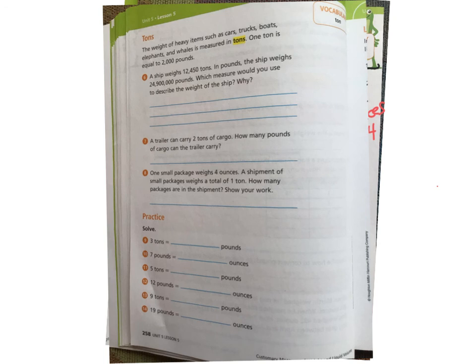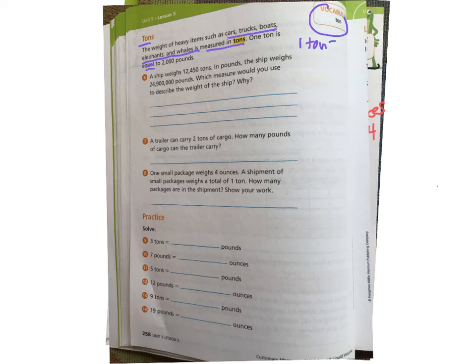And here we are on our last page for today. Today we are talking about the word ton. Have you ever heard anybody say, oh, this weighs a ton? Well, that actually is an expression that a lot of people use. But we're going to find out how much does a ton actually weigh. Maybe you already know. All right. The weight of heavy items such as cars, trucks, boats, elephants, and whales is measured in tons. One ton is equal to 2,000 pounds. So one ton equals 2,000 pounds. I went a little crooked there. All right. So that's important. That's one of the things we're going to be, that number we're going to be using today.